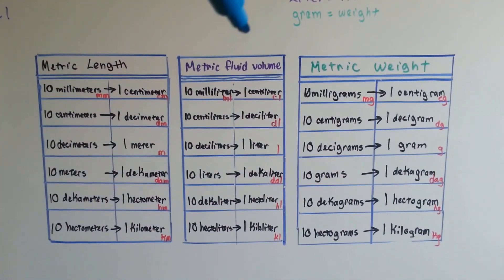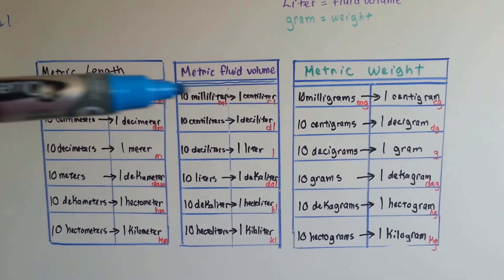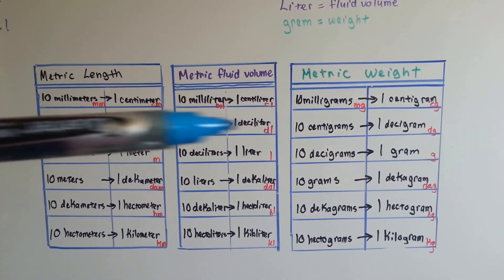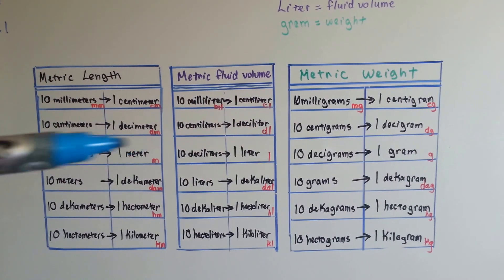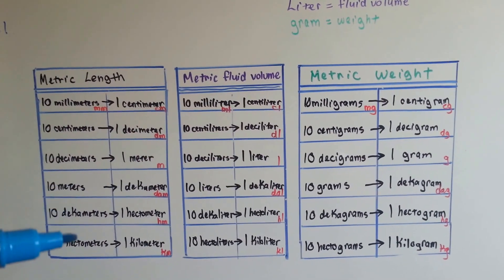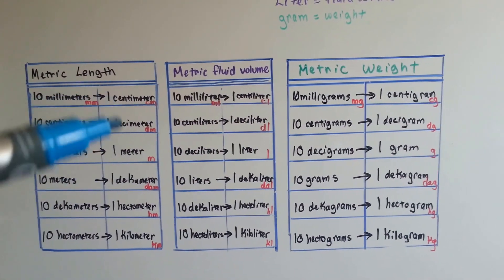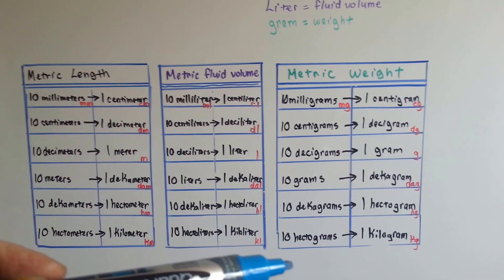If we looked at all three charts for length, fluid volume, and weight, you could see that all across is milli, then centi, then deci, and then the meter, liter, or gram, and then the deka, hecto, and kilo. They're all in the same place. They just have their different suffix on them, and they're all based on ten.